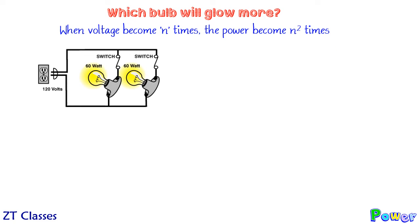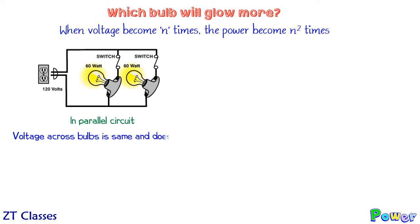First, we take the case when two bulbs of the same wattage are connected in parallel. In parallel, we know that the voltage supply is the same across each branch. So if both bulbs have the same voltage across them, both will dissipate the same power — there will not be any difference. Both of them will glow equally.